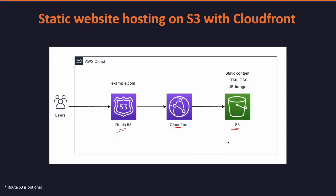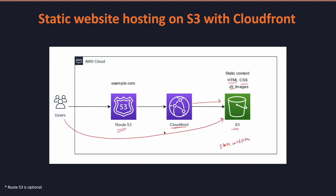As most of us know, S3 is an object-based storage, but very few know that it can also be a home for a static website. So here we can have our HTML, CSS, and JS files in the S3 bucket. Along with that, we can set up a CloudFront distribution which will point to S3. As a best practice, traffic should not bypass CloudFront and hit our public bucket. For that, we have to configure Origin Access Identity, or OAI, to secure our S3 bucket.